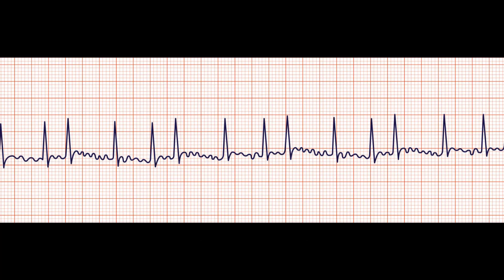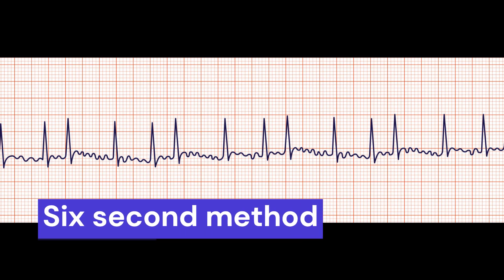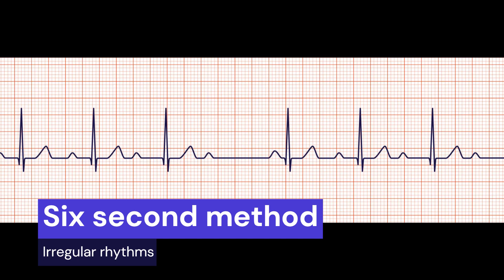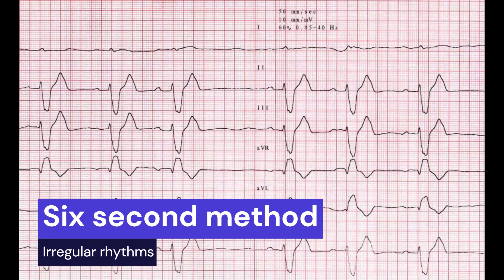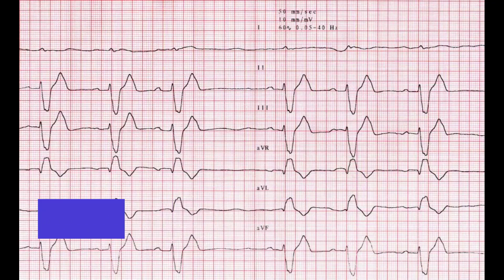It's important to note that an EKG rhythm can sometimes be irregular, making it difficult to accurately determine the rate. In such cases, you may need to count the number of QRS complexes over a longer time interval, such as 12 seconds, to get a more accurate estimate of the heart rate.